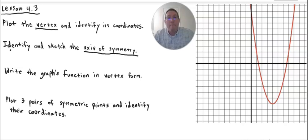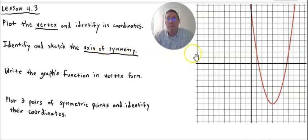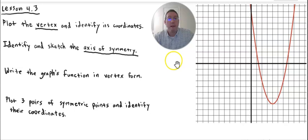The axis of symmetry is a vertical line that runs through the vertex. Why is it called the axis of symmetry? Because a parabola is a mirror image of itself on the left and the right. If we drew our axis of symmetry vertically, the left would be a mirror image of the right. Just like the y-axis and x-axis, this is the axis that creates the line of symmetry for the parabola.